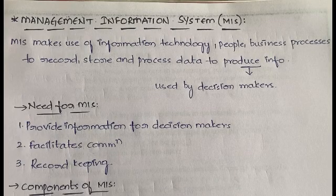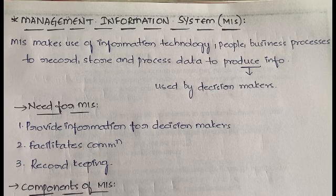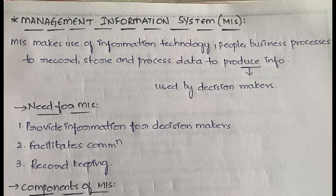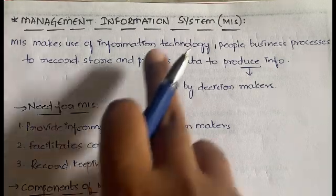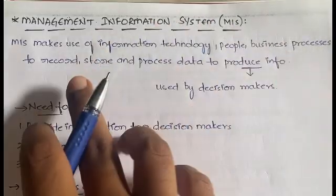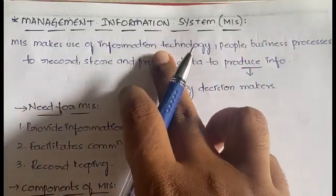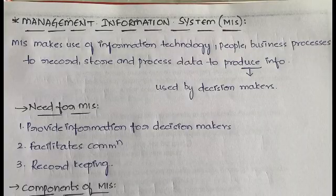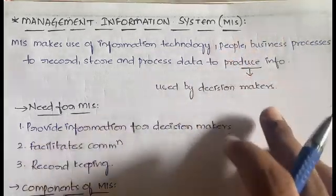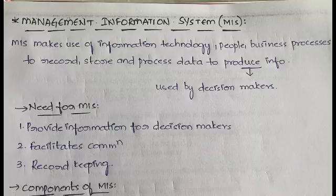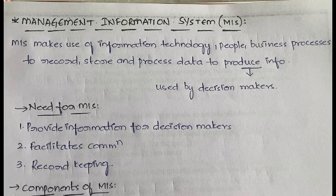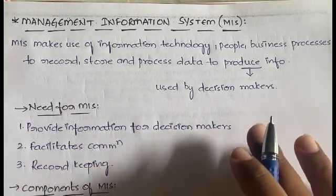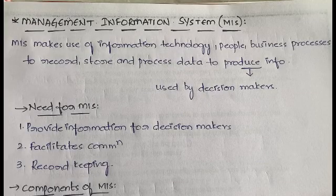Management Information System is a concept related to a contemporary management approach — it is one of the 12 contemporary management approaches. It makes use of information technology, the people, and the business processes in order to record and store data about our organization or business, and produces information. This information is used for decision making by decision makers to take important decisions related to management.